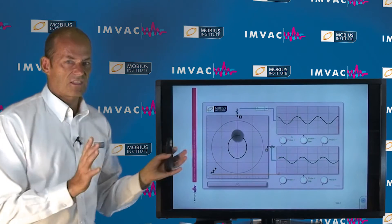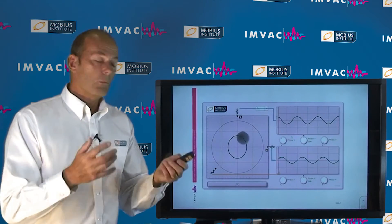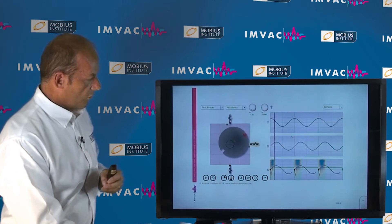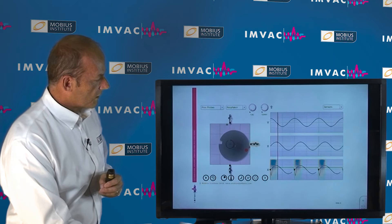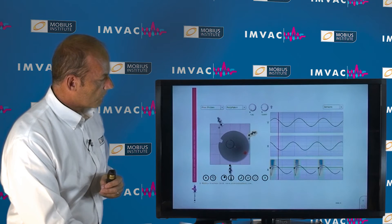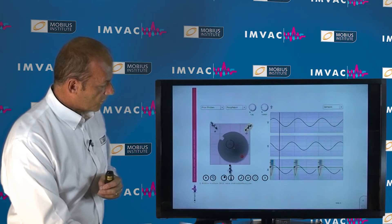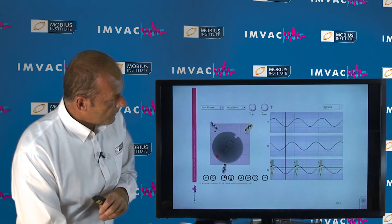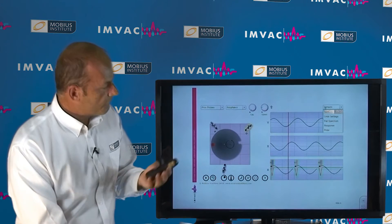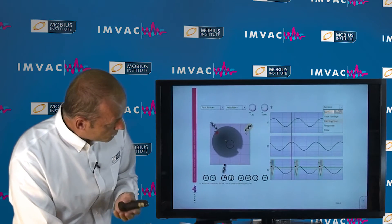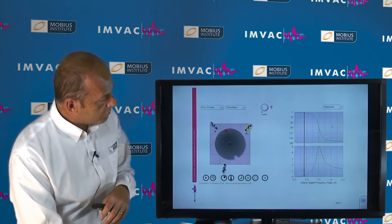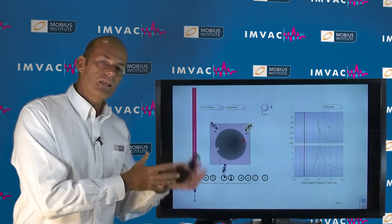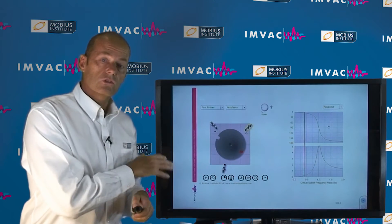I can do lots of things to explain what's happening with orbit plots and all of the measurements that involve proximity probes — what the time waveform looks like, what happens if the probes are in different locations or the keyphasor in different locations. We can talk about orbit data, waveform data, the full spectrum, the response plots — you name it. We can explain and illustrate it all with these really useful simulators.